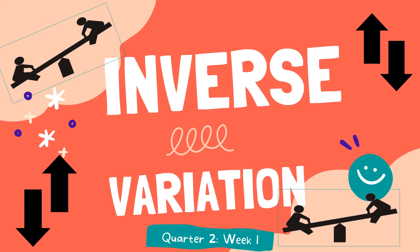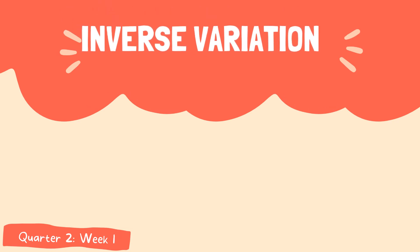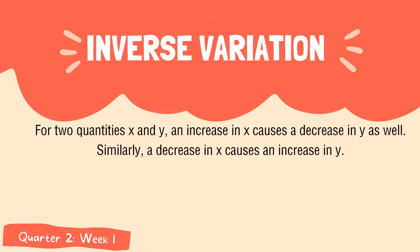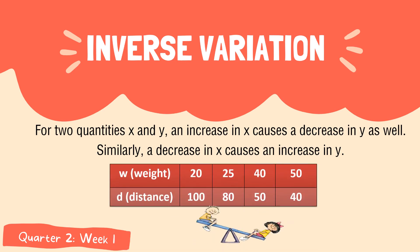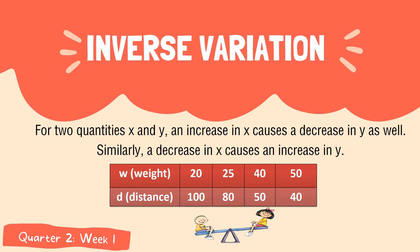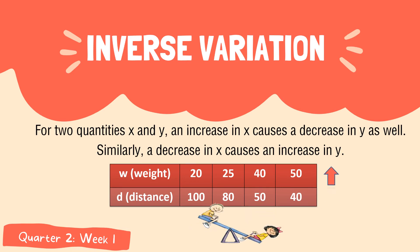Let us discuss the second type of variation, which is the inverse variation. When we say inverse variation, for two quantities X and Y, an increase in X causes a decrease in Y. Similarly, a decrease in X causes an increase in Y. Here is an example of a table of values with two variables: weight and distance. As we are playing on a seesaw, as the weight increases, the length or distance of the two people on the seesaw decreases.